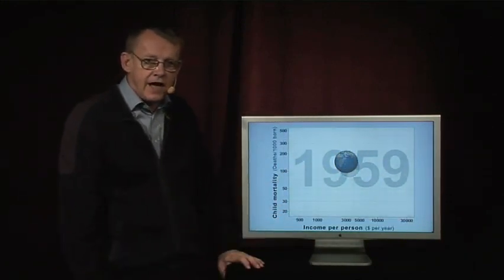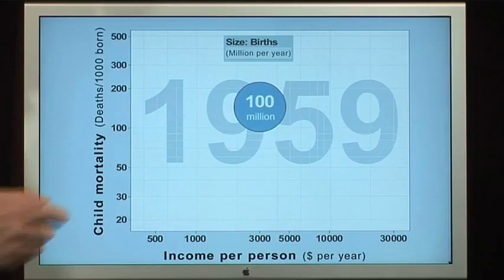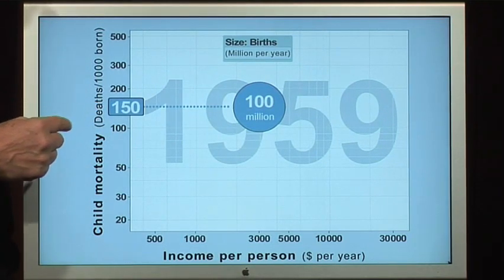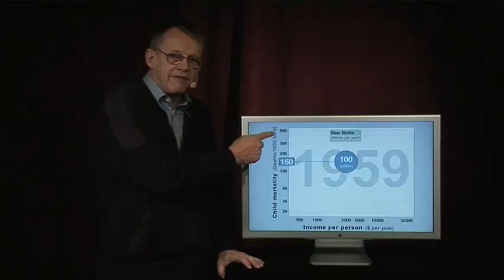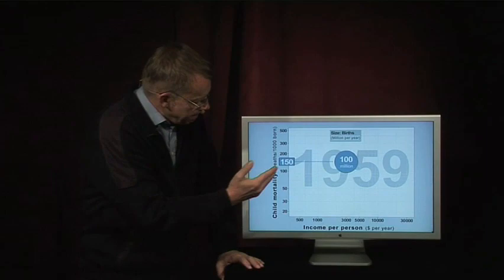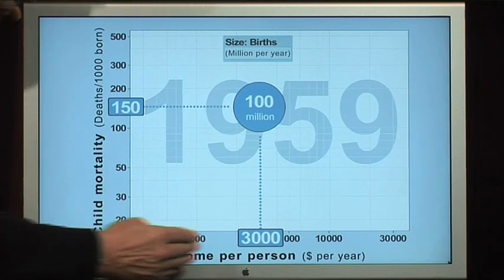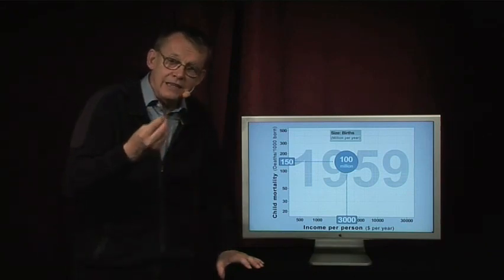This is the world in 1959. The size of this bubble represents the number of children born in the world — 100 million children born that year. On this axis we can see child mortality: 150 deaths per 1,000 children born, with the axis ranging from 20 to 500 deaths per 1,000. This axis shows income per person: $3,000 per year in 1959, ranging from $500 to $30,000. But the world was obviously very unequal, and I will show this by splitting the world bubble into country bubbles.